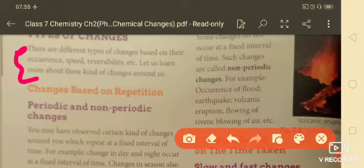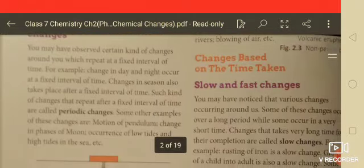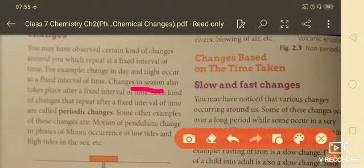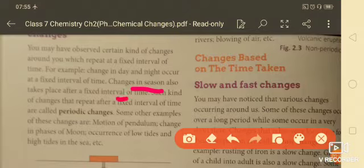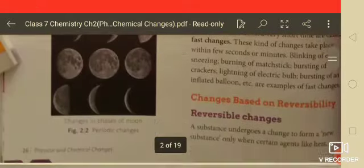Changes based on repetition: periodic and non-periodic changes. You know that some changes occur in seasons. The changes in seasons take place after fixed intervals of time. Such changes that repeat after a fixed interval of time are called periodic changes. Second is non-periodic changes, which do not occur at a certain interval of time.